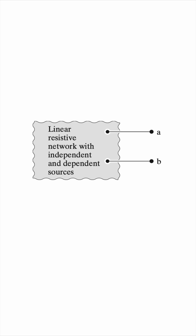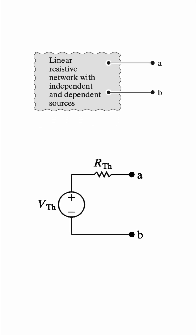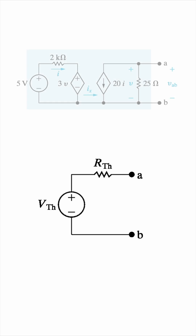The Thevenin equivalent represents any network as just a voltage source in series with a resistor. The two setups are exactly equivalent with respect to terminals A and B, and the original circuit can be very complex. This would still hold.